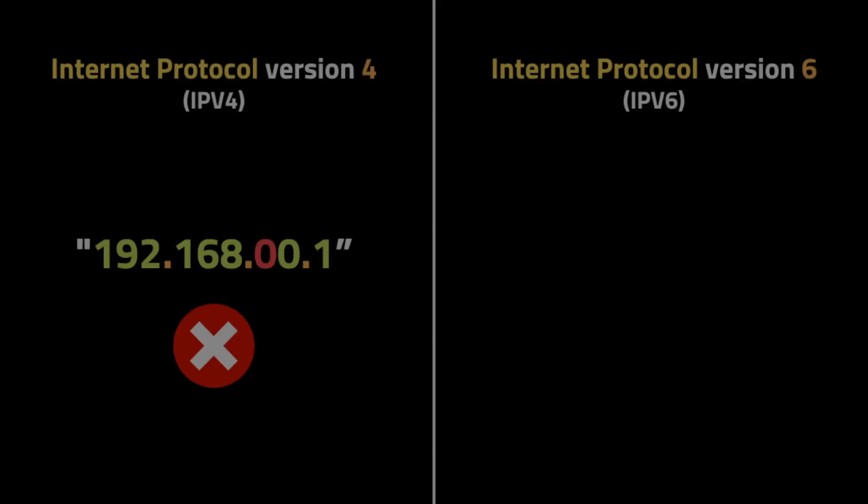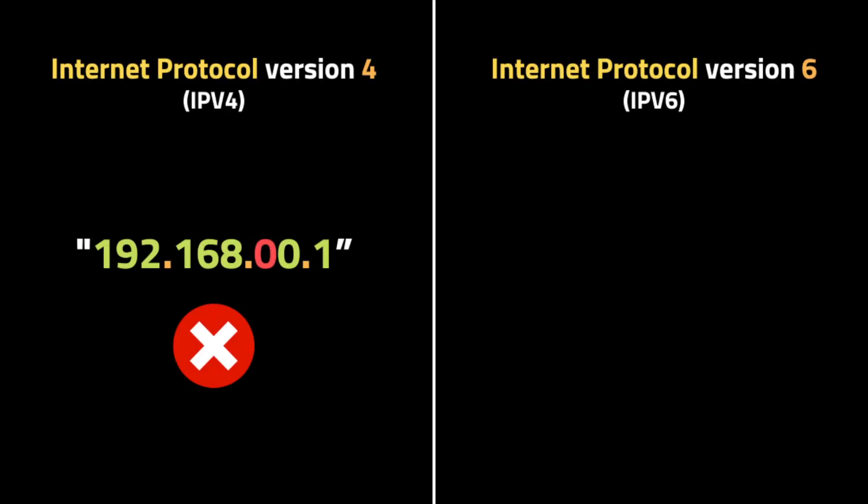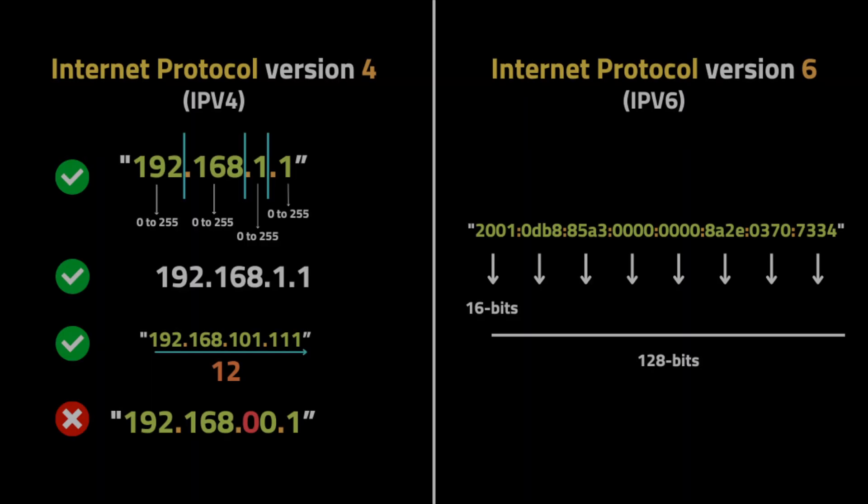The third characteristic is that we cannot have any leading zeros. For example, an IP address with two leading zeros is invalid — leading zeros means zeros that come before a number or before another zero. Moving to IPv6: it has a 128-bit address consisting of eight groups of digits separated by colons. Each group should have exactly four hexadecimal digits, and leading zeros are allowed in IPv6.